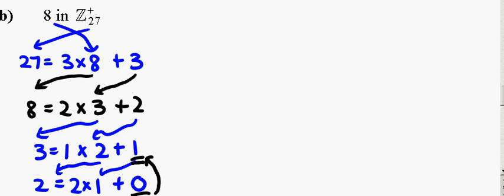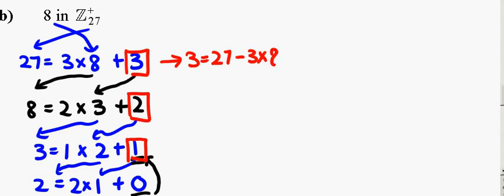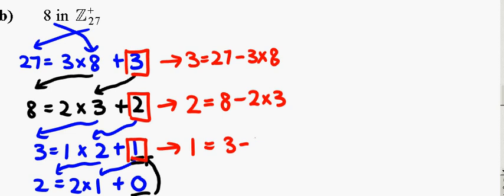And, if you wish to find the multiplicative inverse of 8 in Z27, we will now work on all the remainders over here and re-express them. From this, we know that 3 is equal to 27 minus 3 times 8. From this, I know that 2 is equal to 8 minus 2 times 3. And, 1 is equal to 3 minus 1 times 2.